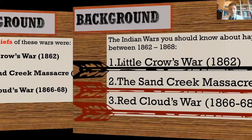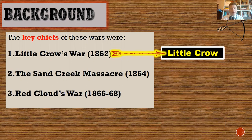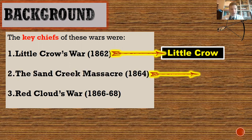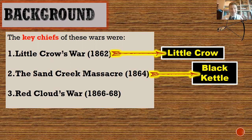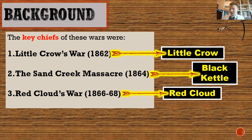There's a really easy way to remember what years these conflicts happened: 1862 Little Crow, 1864 the Sand Creek Massacre, and 1866 to 68 Red Cloud's War — remember this as two, four, six, eight. Red Cloud's War is a two-to-three-year war. It's important you know the chiefs of all three conflicts. Little Crow's War — the chief is Little Crow. The Sand Creek Massacre chief is Black Kettle, because Sand Creek is where the massacre happens, not the name of the chief. And quite obviously, Red Cloud's War — the chief is Red Cloud. So: Little Crow, Black Kettle, and Red Cloud.